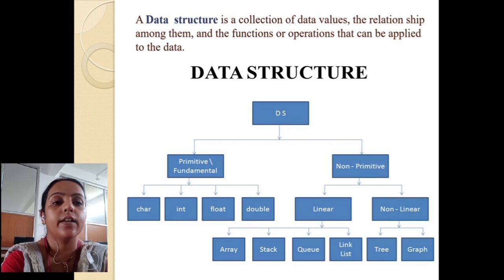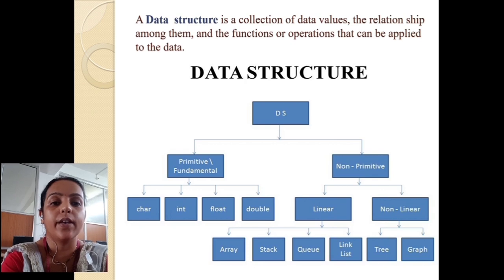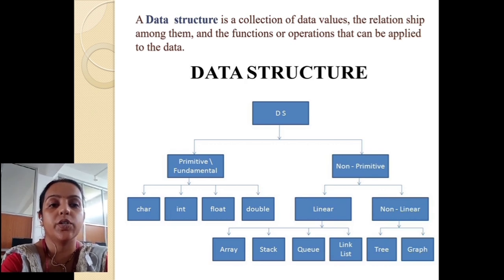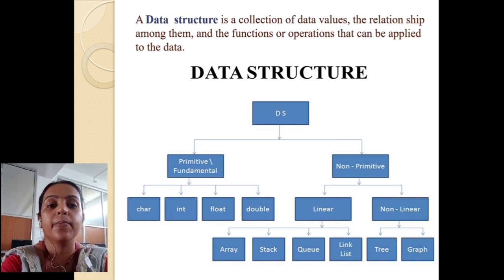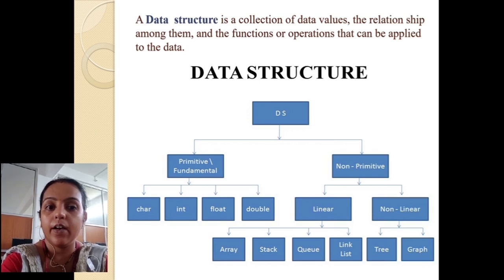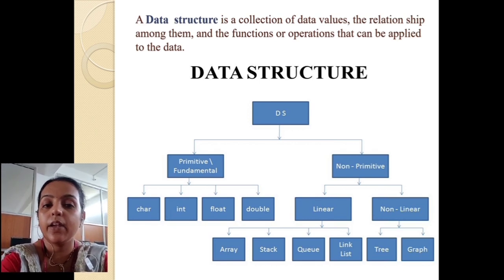In this diagram you can see that data structure has two types: first is primitive — also called fundamental — and the other is non-primitive data structure. In primitive data structure there are character, integer, float, and double. These are the data types in C that we learn — which type of data type and what they represent.